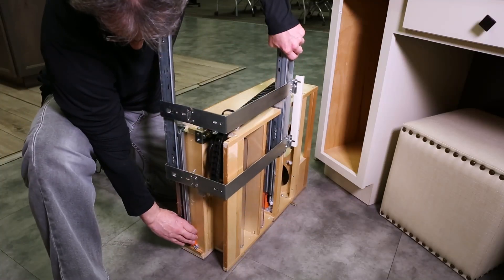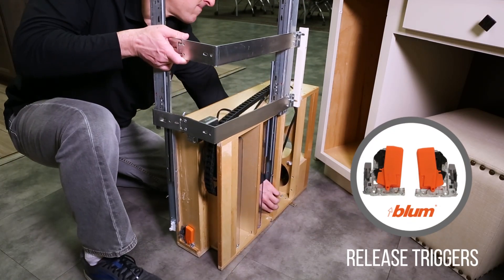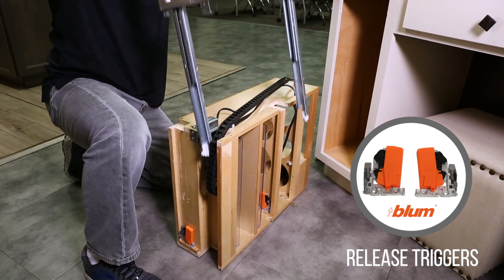Place the unit on its side and lift the slide set. Squeeze each of the release triggers to remove the slide set from the unit.